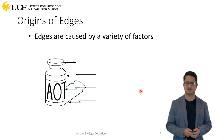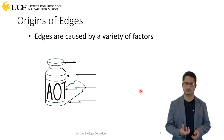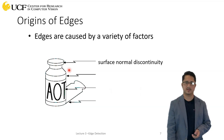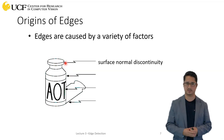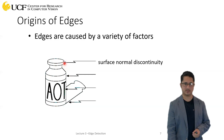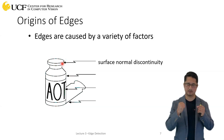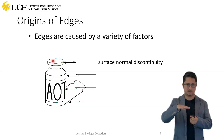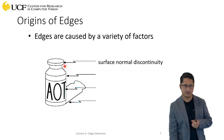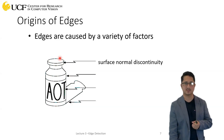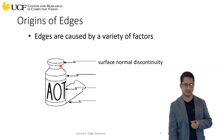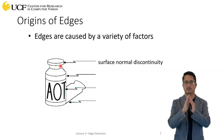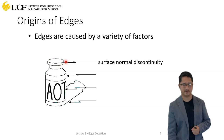Why do we observe edges in images? The first reason is that the surface normal may be changing. For example, on a flat surface the normal points toward you horizontally, but at the top of a cap the normal points upward — whenever the surface normal changes, we observe an edge. The second reason is discontinuity in depth: where an object meets a background, the depth difference produces an edge.